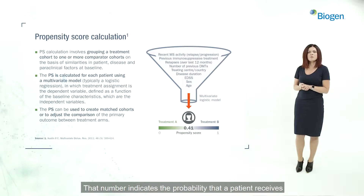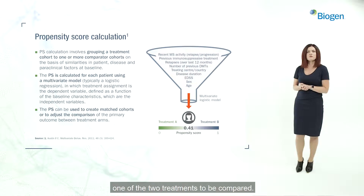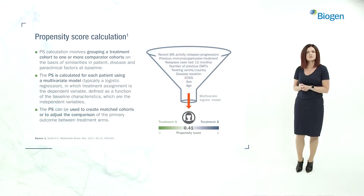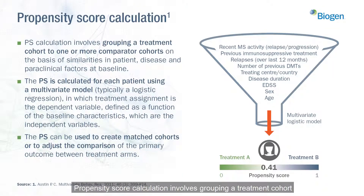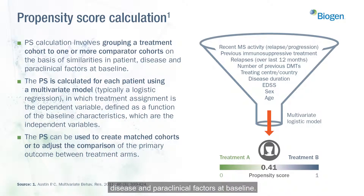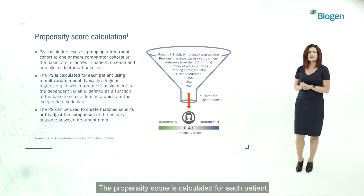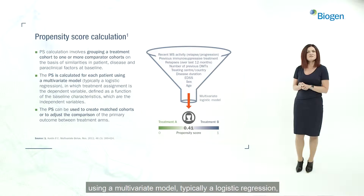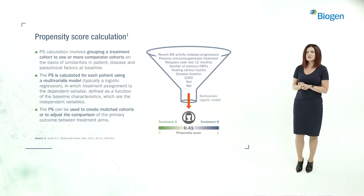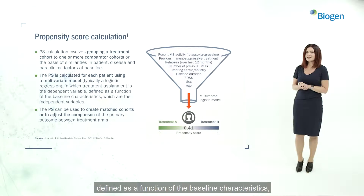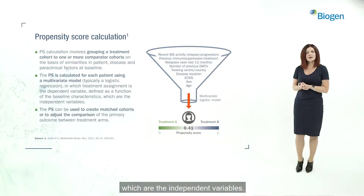That number indicates the probability that a patient receives one of the two treatments to be compared. Propensity score calculation involves grouping a treatment cohort to one or more comparator cohorts on the basis of similar patient, disease, and paraclinical factors at baseline. The propensity score is calculated for each patient using a multivariate model, typically a logistic regression, in which treatment assignment is the dependent variable defined as a function of the baseline characteristics, which are the independent variables.